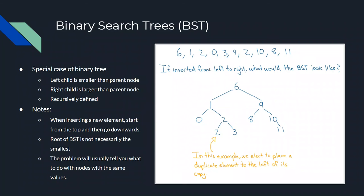If you insert these integers from left to right, let's think about what the BST looks like. We place 6 first — it's the root. Then 1 is less than 6, so we make 1 the left child of 6. Then 2 is smaller than 6 but greater than 1, so it goes there. If you follow this pattern, this gives you the binary search tree. We actually have two duplicate items with value 2. Here we elect to place the duplicate element to the left of its copy. Whenever you have a BST problem that allows duplicate values, it will almost always tell you what to do with them.